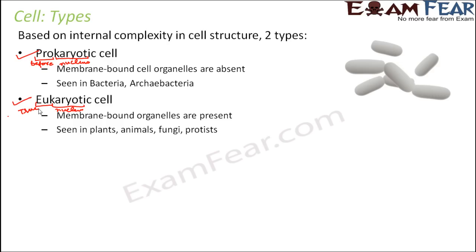You remember Whittaker's five kingdom classification — there were five kingdoms into which all living organisms can be classified: Monera, Protista, Fungi, Plantae, and Animalia. Out of those five kingdoms, the first kingdom, Monera, falls under the prokaryotic type, whereas all other kingdoms fall under eukaryotic.